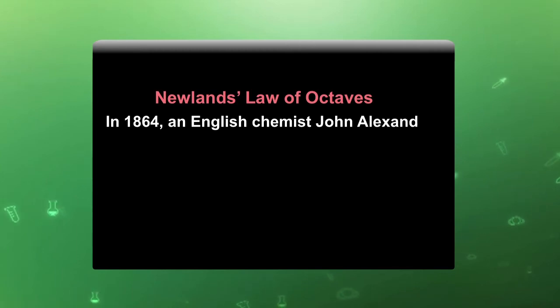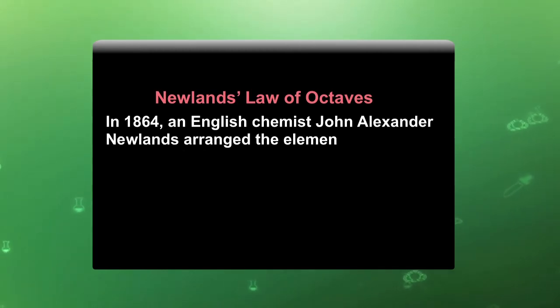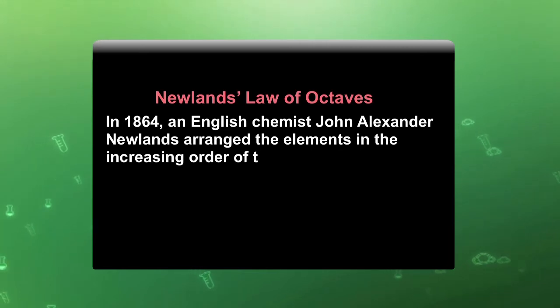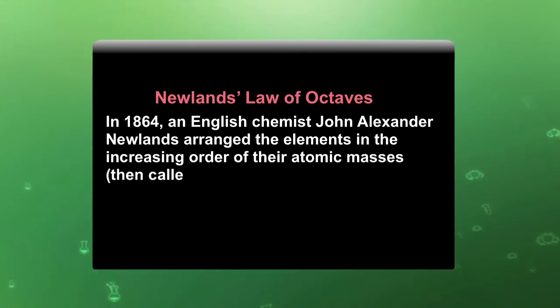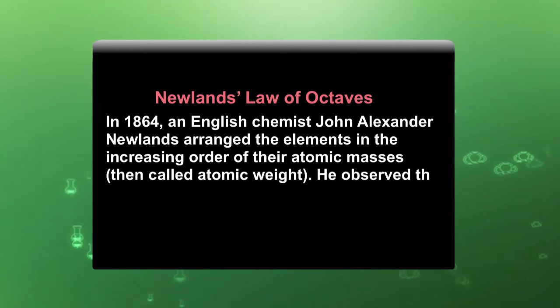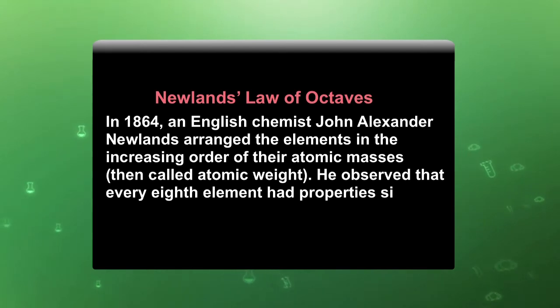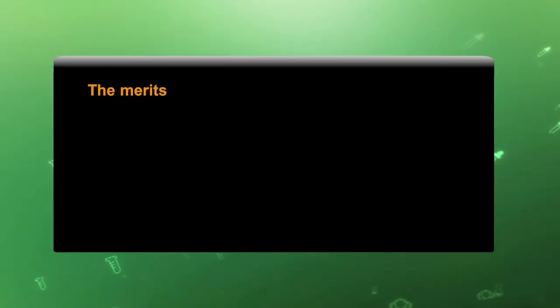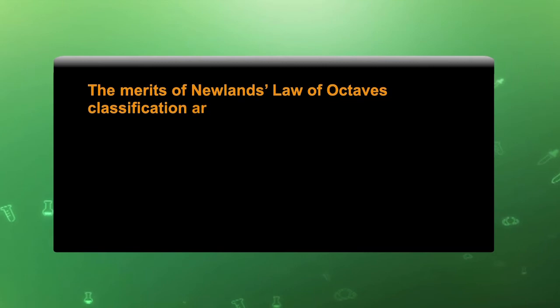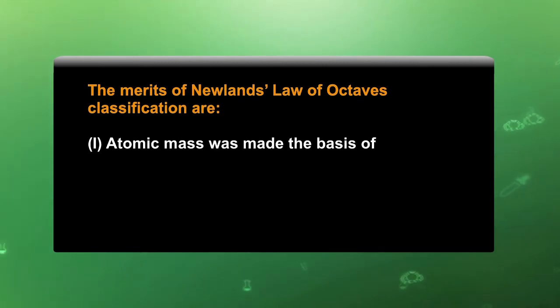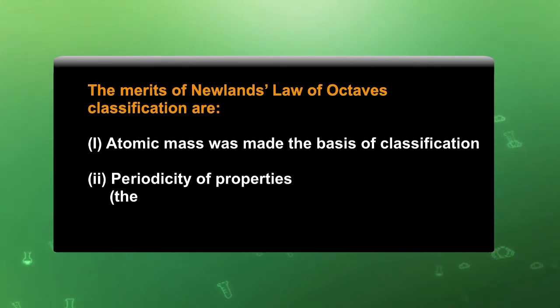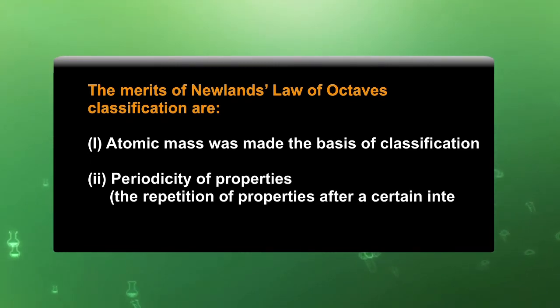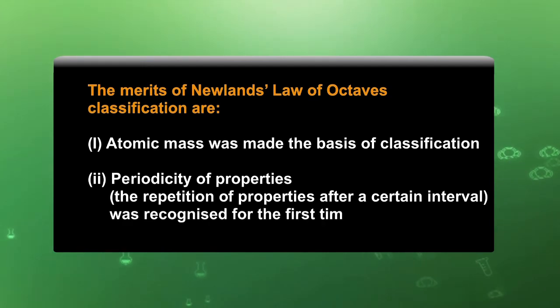Newland's Law of Octaves was the second attempt to classify elements. In 1864, an English chemist, John Alexander Newland, arranged the elements in increasing order of their atomic masses, then called atomic weight. He observed that every eighth element had properties similar to the first element, as in the musical tones of octaves. The merits of Newland's Law of Octaves are: atomic mass was made the basis of classification, and the periodicity of properties — the repetition of properties after a certain interval — was recognized for the first time.